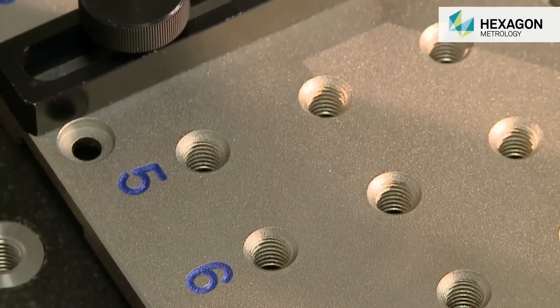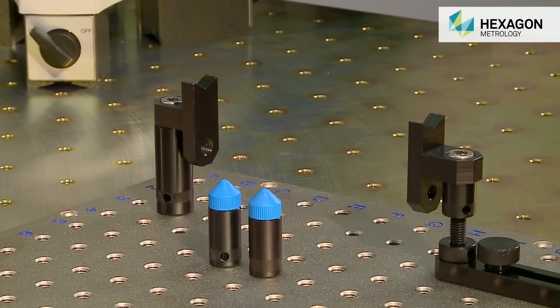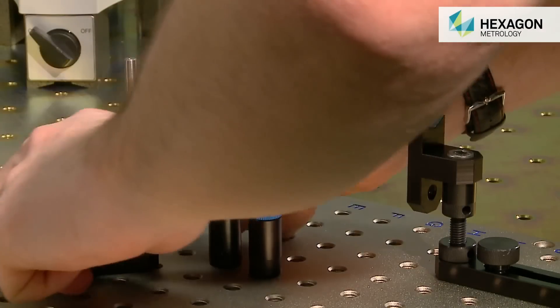SwiftFix is based on a reusable lightweight aluminium plate, into which various types of holding and clamping components can be inserted to build up the required fixture.